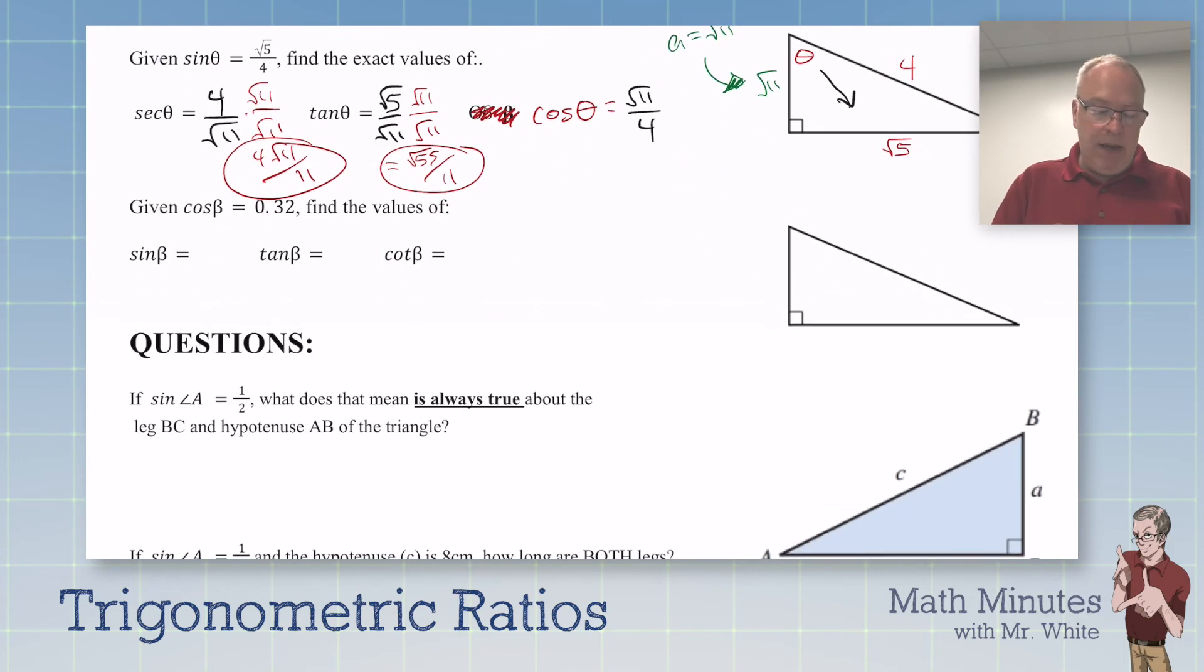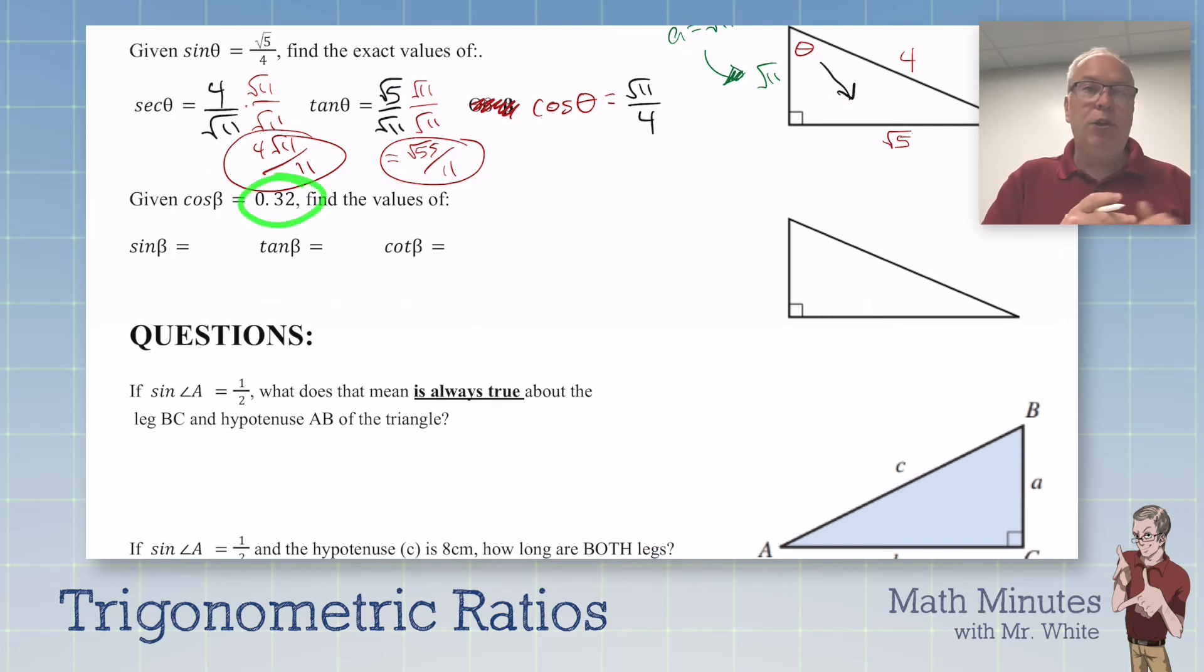Okay, moving on here. We have a trig function given to you as a decimal this time. They can be decimals because fractions are just one way to write a number. You can write them as a decimal also. So I like to think about this as 0.32 over 1. But the cosine of beta, that's another Greek symbol, beta - I'm going to put it down there. So cosine is 0.32. So I'll put my 0.32 here, and I'll put my 1 there. And then I need to figure out that other side. So I do 0.32 squared plus b squared equals 1 squared.